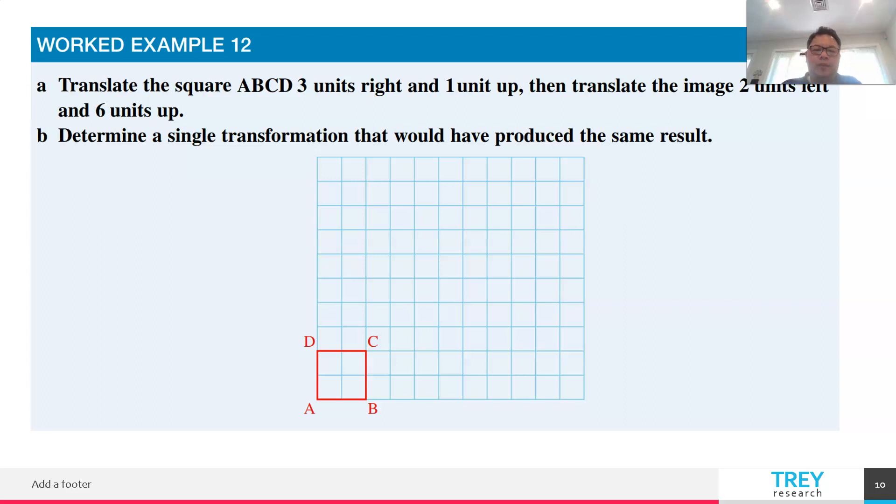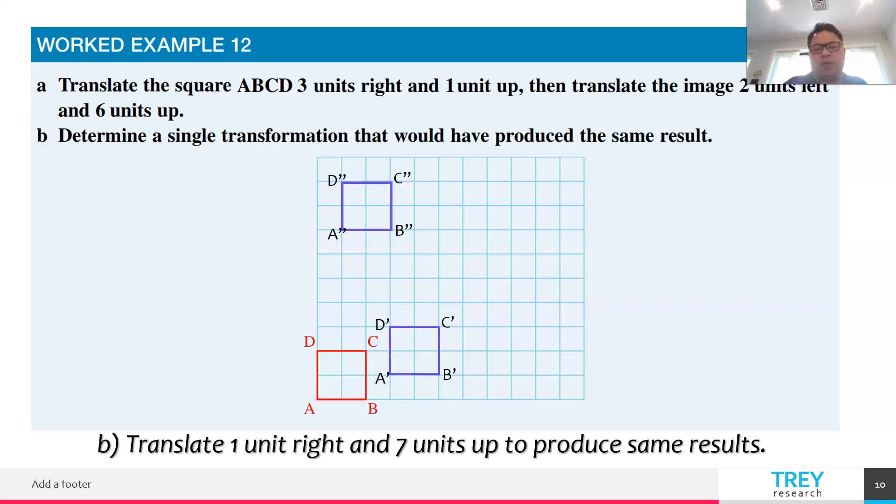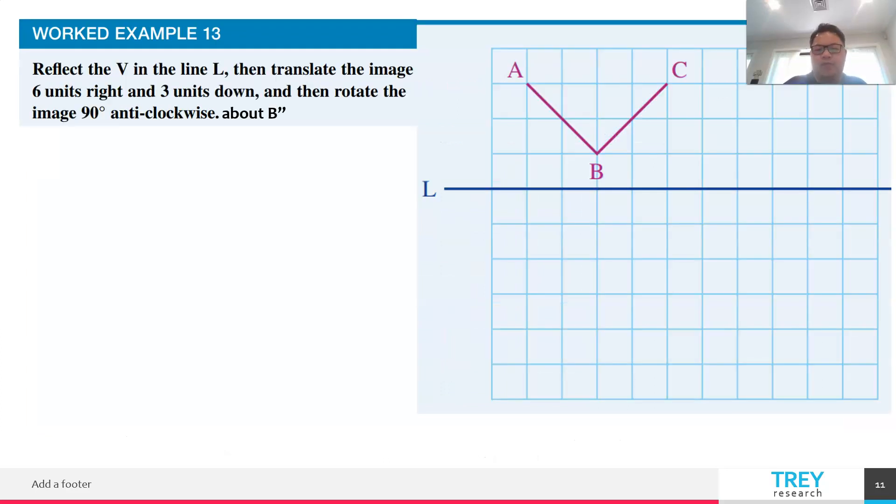You're supposed to determine how to describe a single transformation. In the first part, you have two different sets of instructions. First, you are required to move ABCD three units right and one unit up. When I do that, that is the image. Then after that, translate the image two units left and six units up. That's how I get A prime, B prime, C prime, D prime. Now in order for us to use a single transformation that can produce the same result, we can easily translate one unit to the right and seven units up rather than going through two different steps.